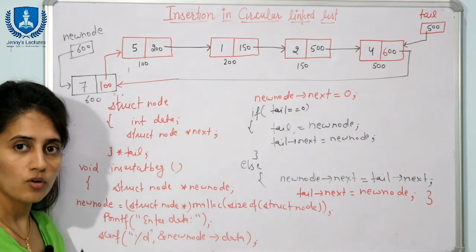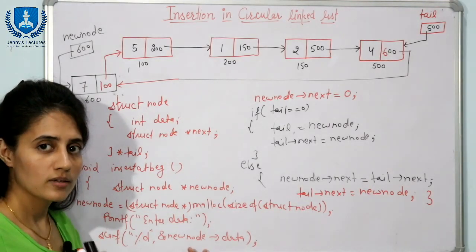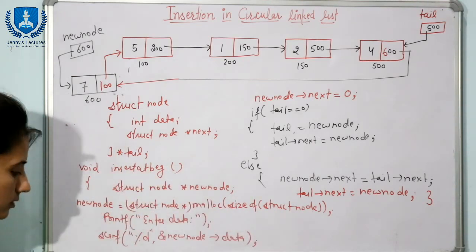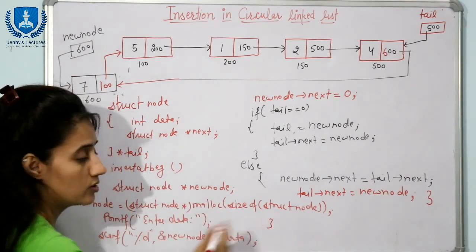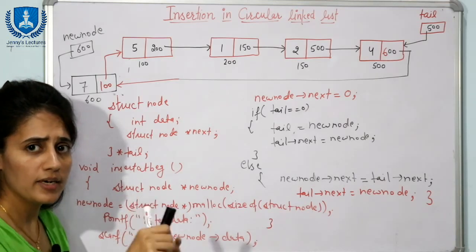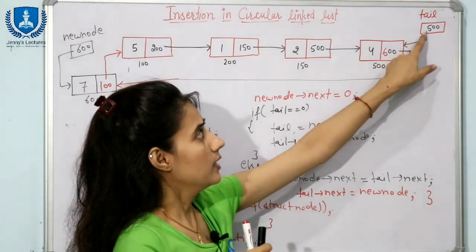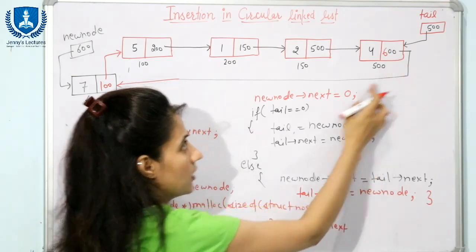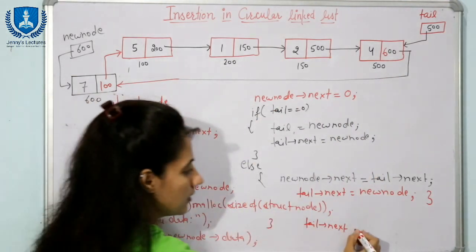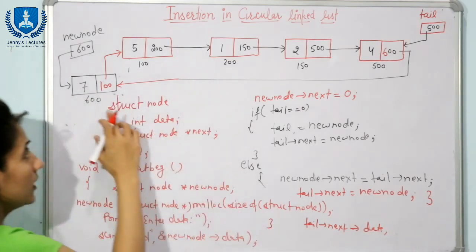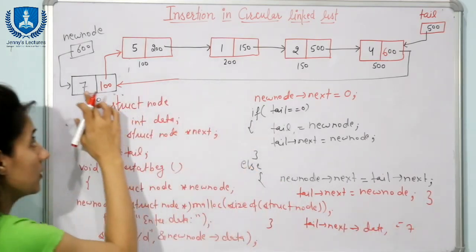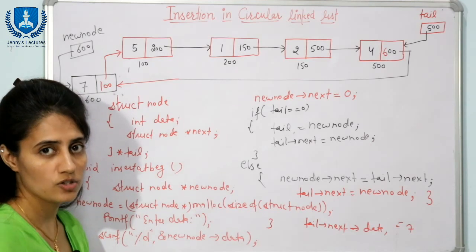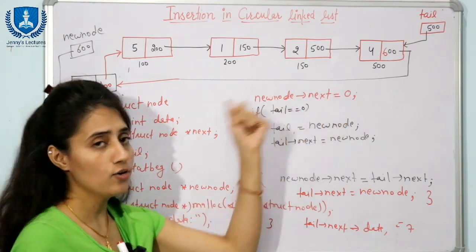Second, since the last node must contain the address of the new first node, we update tail->next = new_node. Now tail->next contains the address of the new node (600). To verify the insertion, you can print tail->next->data, which should output 7, confirming the new node is now the first node.